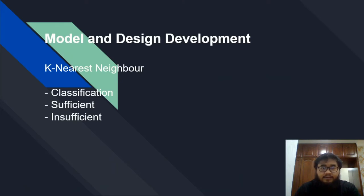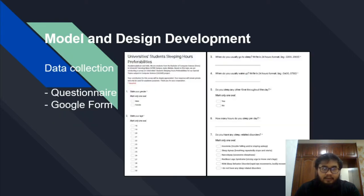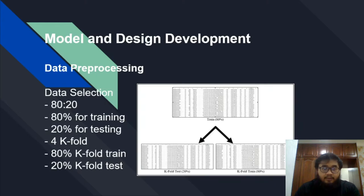We use the K-nearest neighbor algorithm for classification to decide whether a student is getting sufficient or insufficient sleep. Moving on to data collection, we made a questionnaire through Google Form and shared it with our friends for them to fill out. For data selection, we use the 80-20 ratio: 80 for train, 20 for test.